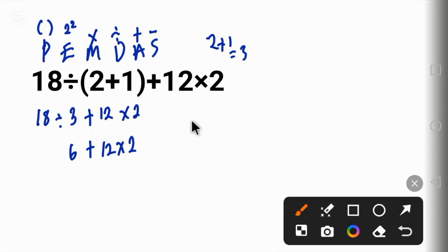12 times 2 gives us 24. So we have 6 plus 24, and 6 plus 24 gives us 30. This is the correct answer.